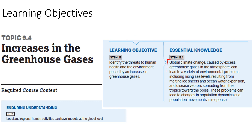Briefly, the essential knowledge from learning objective 9.4: we are increasing greenhouse gas concentrations in the atmosphere. Global climate change caused by excess greenhouse gases in the atmosphere can lead to a variety of environmental problems — rising sea levels, and disease vectors spreading from the tropics towards the poles. Mosquitoes that carry malaria or dengue fever are shifting their ranges into higher latitudes as those latitudes warm. We also briefly mentioned warming oceans, ocean acidification, and changes in the regularity and severity of storms and droughts. Keep these in mind as we keep talking about the carbon cycle.